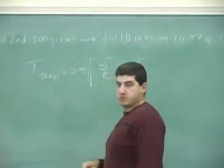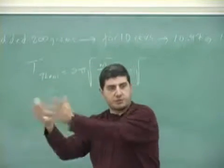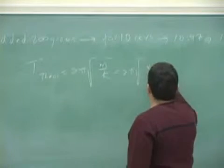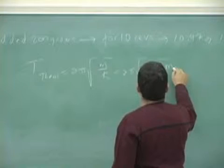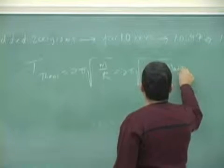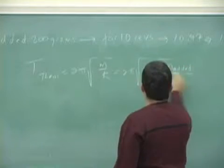m is what? The effective mass of the spring, which is x, right? Plus the total mass that I have on it divided by k.